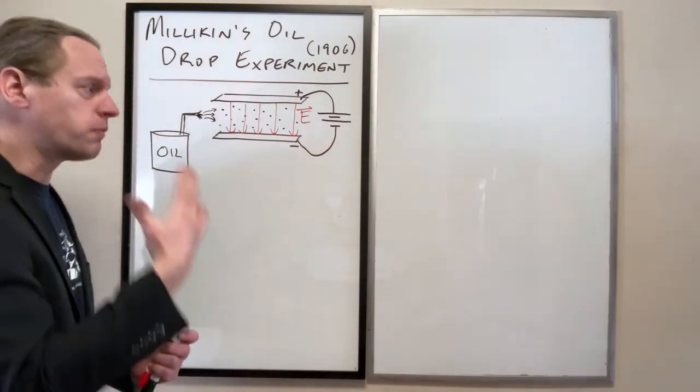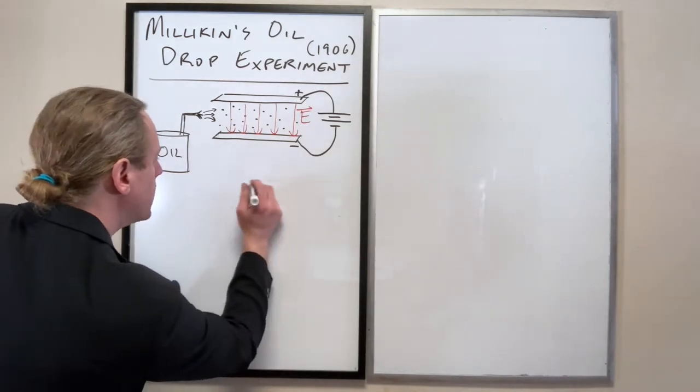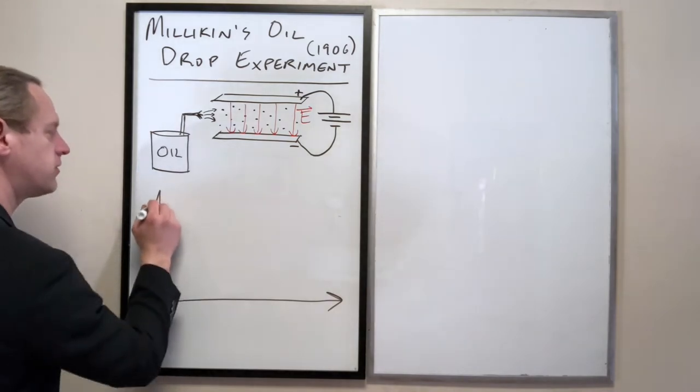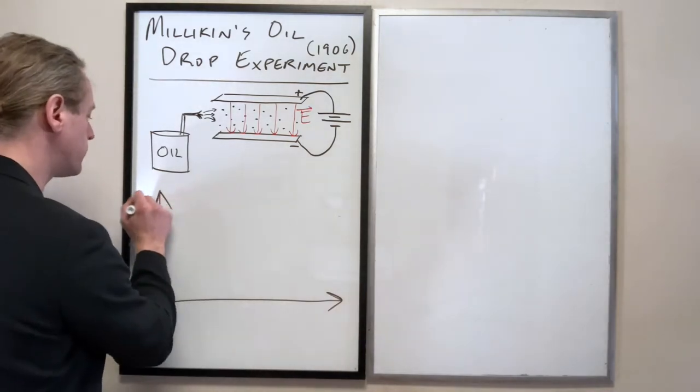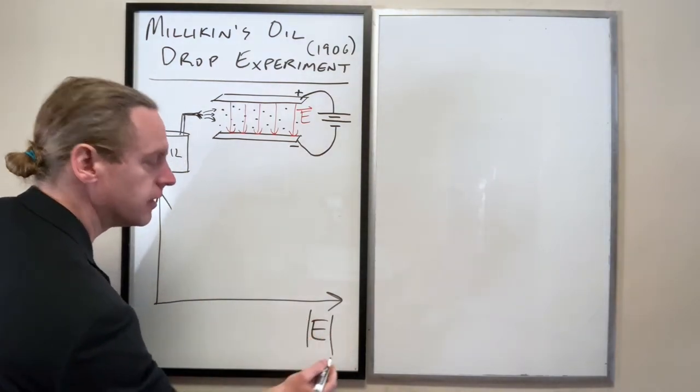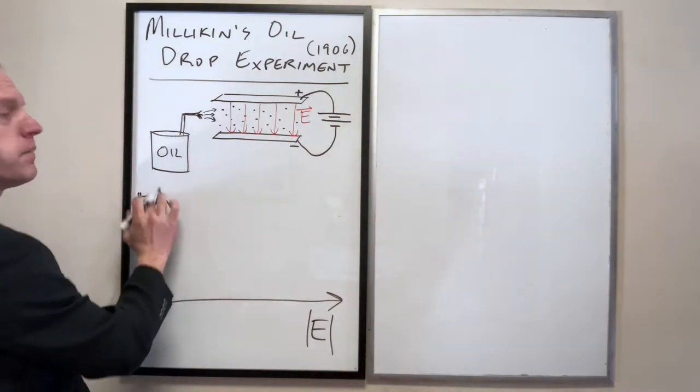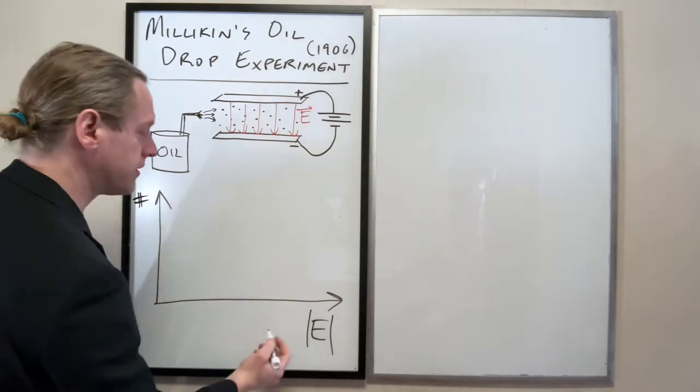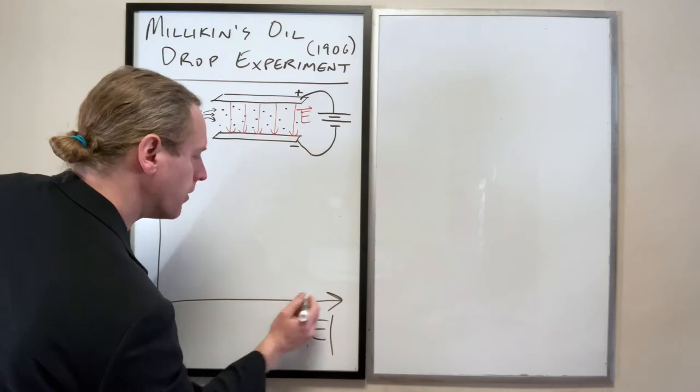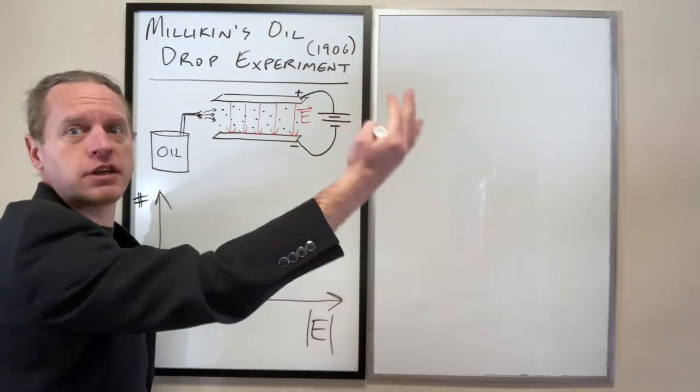So it's this weird distribution of all of these seemingly random numbers that we're getting. And so this is what it would look like. If we graph, for example, on the electric field axis, this is just a histogram. The number of trials where the electric field, the strength of it at least, will give us a floating particle.